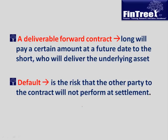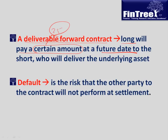So in a deliverable forward contract, the long pays a certain amount — in our example Rs.25,000 — at a future date to the short, who delivers the underlying asset, in our case 1000 kg of potatoes.